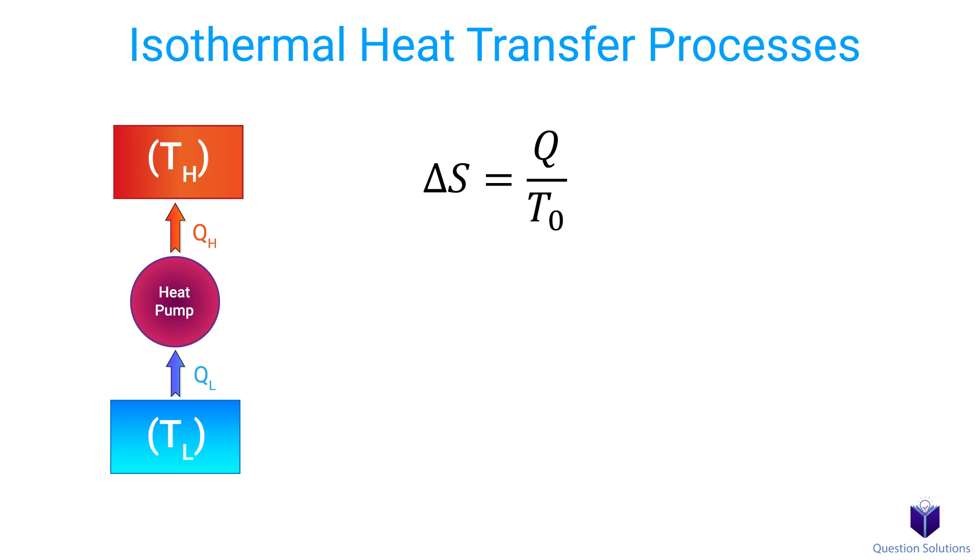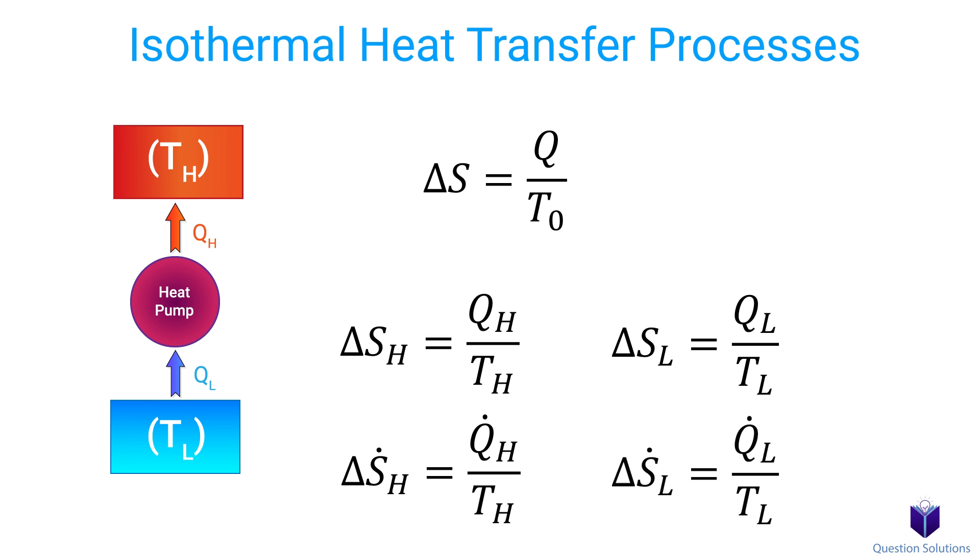This equation is helpful whenever you need to figure out entropy changes in thermal energy reservoirs. For example, if we have qh and th, then it would look like this. If we had ql and tl, it would look like this. It works even in rate form. It's an incredibly useful equation whenever we deal with thermal reservoirs and entropy.